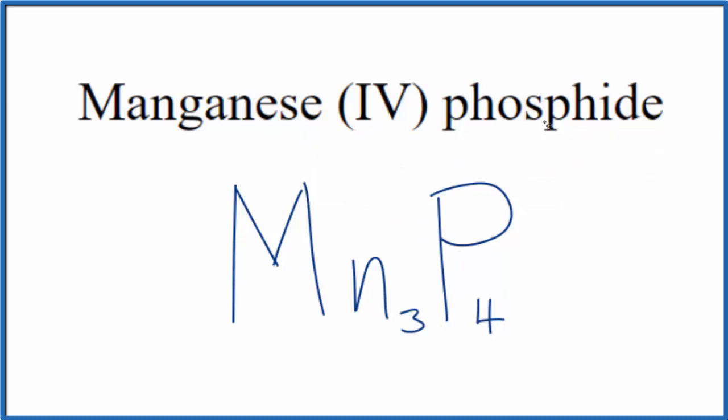But let's check our work. We said phosphorus is 3-, we have this 4, so 4+ for the manganese. 3 times 4+ that's 12+. 4 times 3- is 12-. These two numbers here they add up to 0, we have a net charge of 0.